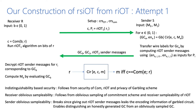However, we cannot argue sender oblivious sampleability since the sender is committed to the RIOT sender messages. Even if we use an oblivious garbling scheme instead of a regular one, the adversary can distinguish because the encoding information is committed inside the RIOT sender messages. If we use an equivocal garbled circuit, the output of the garbling circuit needs to be set at the time of garbling and cannot be changed when inverting the randomness. Hence the RIOT sender messages will again help in distinguishing an obliviously sampled sender message from an actual one.